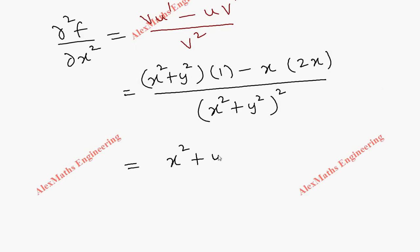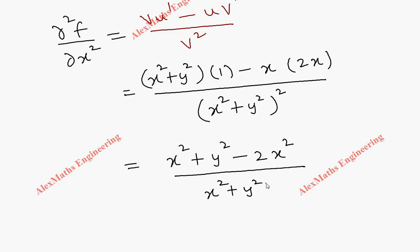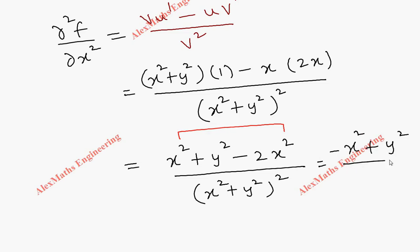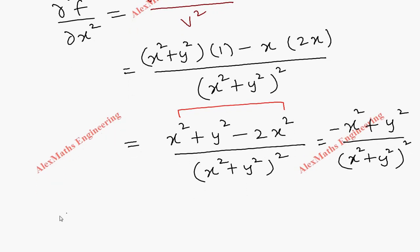Simplifying the numerator: (x²+y²) − 2x² all divided by (x²+y²)². Simplifying the like terms, we get (−x²+y²) divided by (x²+y²)². So ∂²f/∂x² = (−x²+y²)/(x²+y²)².